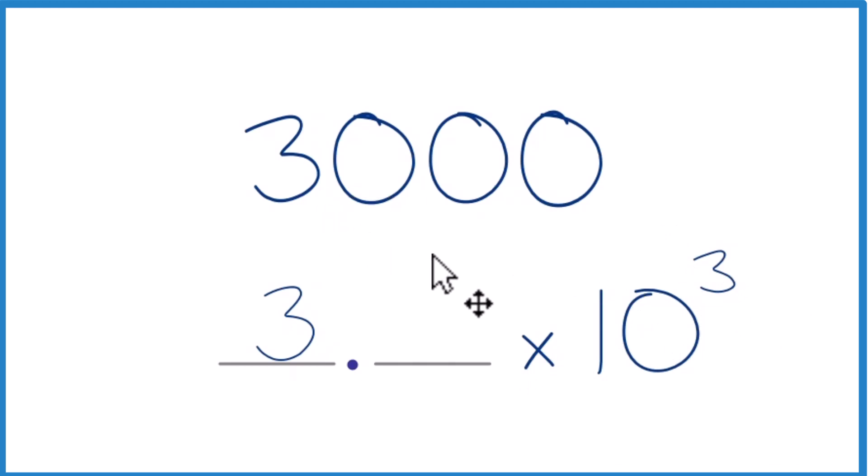So in answer to our question, 3,000 in scientific notation is 3 times 10 to the third, or perhaps 3.0 times 10 to the third. This is Dr. B. Thanks for watching.